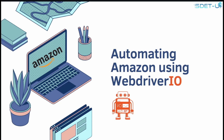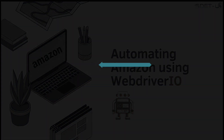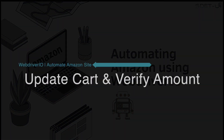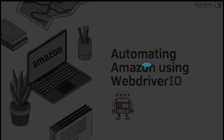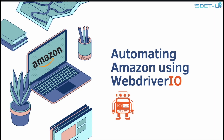Welcome back! In this series we covered lots of different flows on how to automate the Amazon website using WebDriver.io. This is the final video where we're going to update our cart to change the item quantity from 1 to 2 and verify that the subtotal gets updated as well.